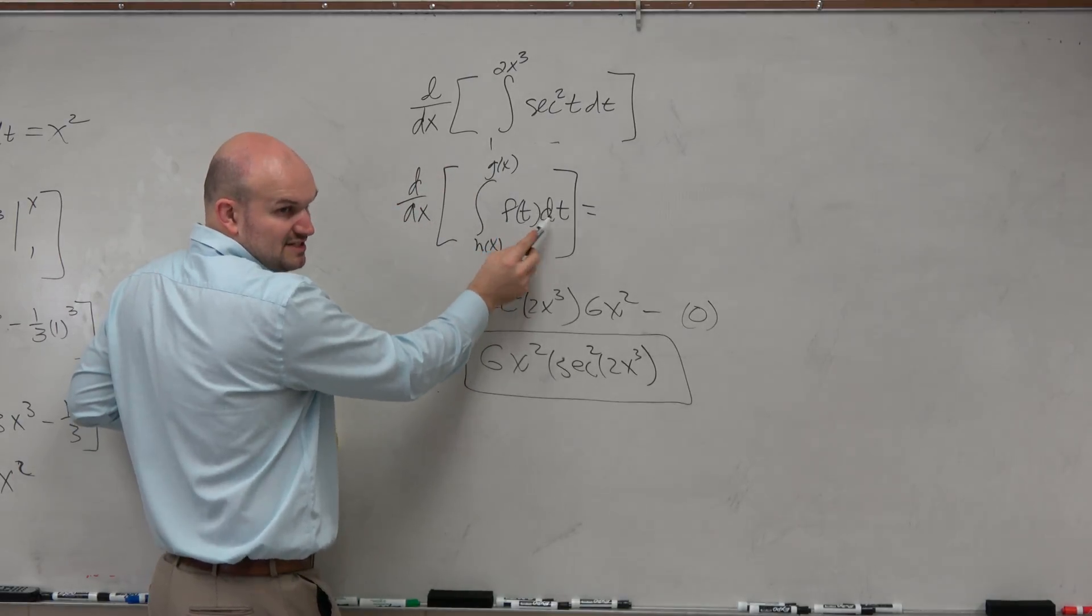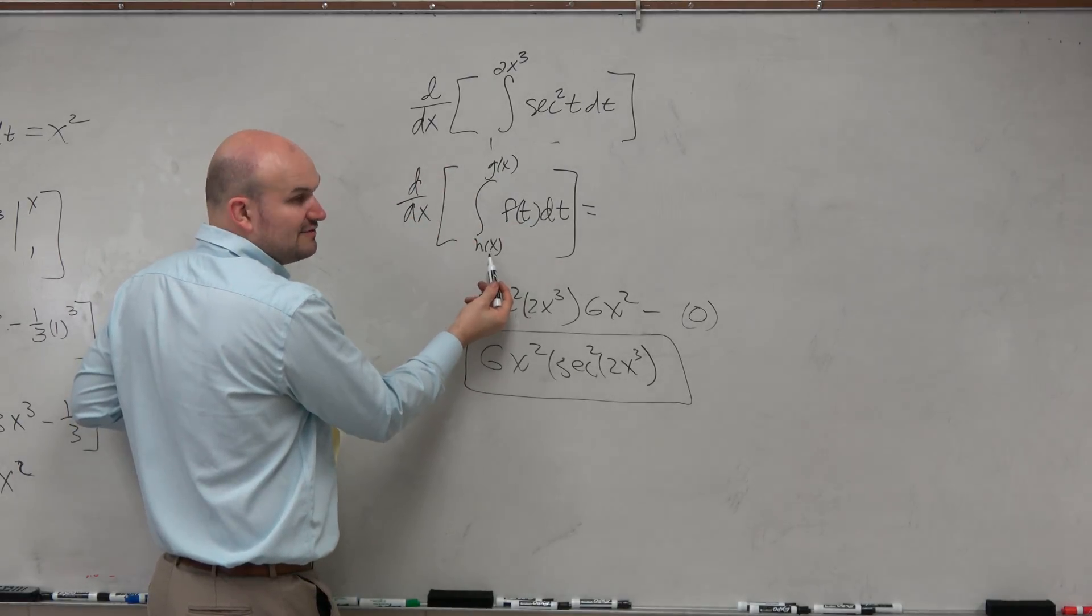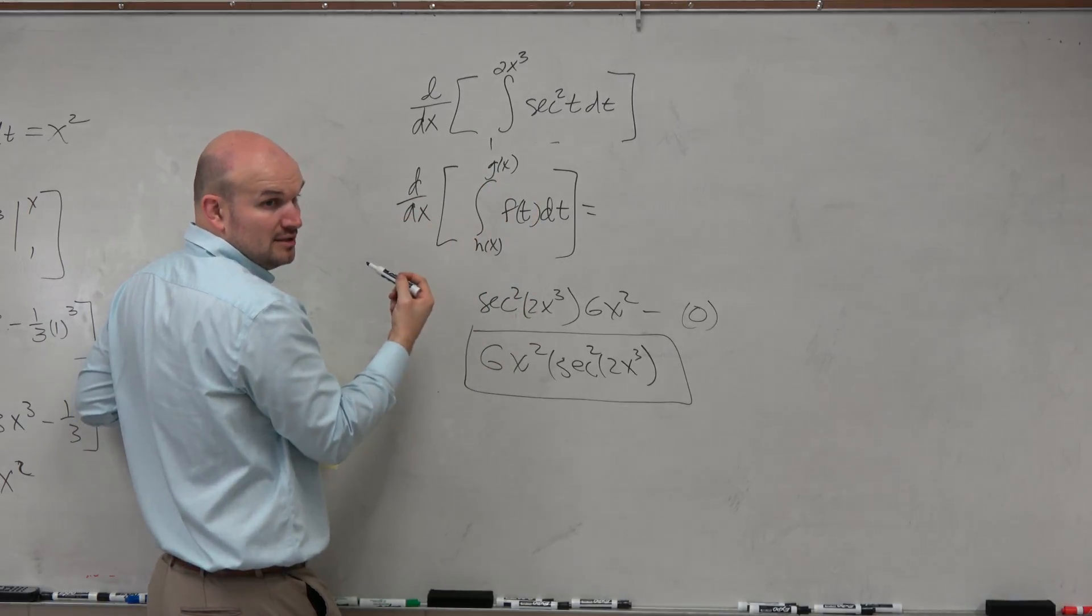So basically, all this is saying, if you have the derivative with respect to x, we've already done the d over dx of f of t dt. But now it's just saying you have a function in the denominator and a function in the numerator.